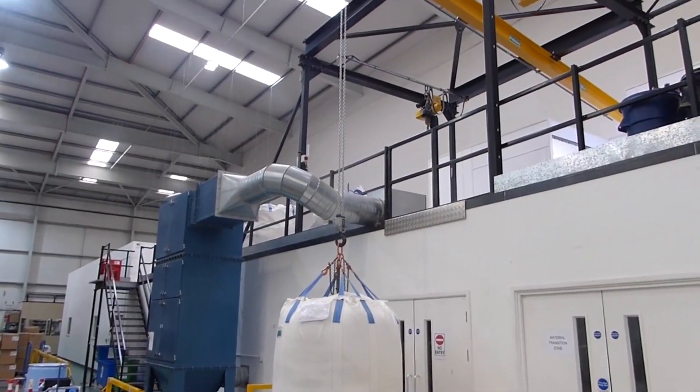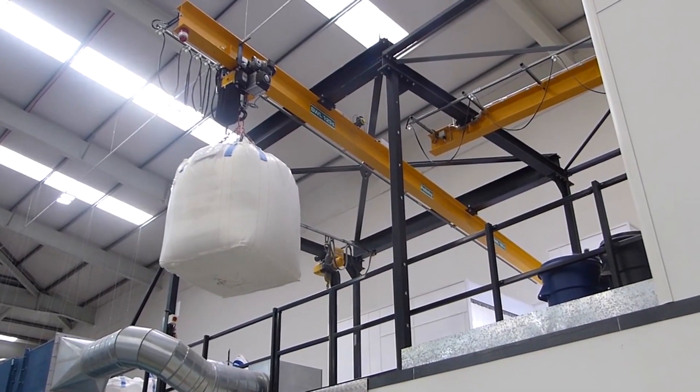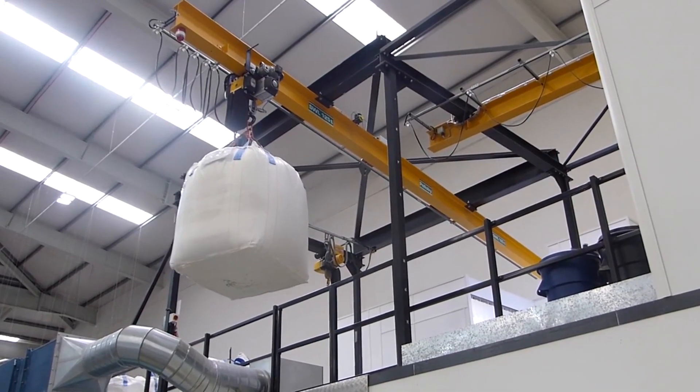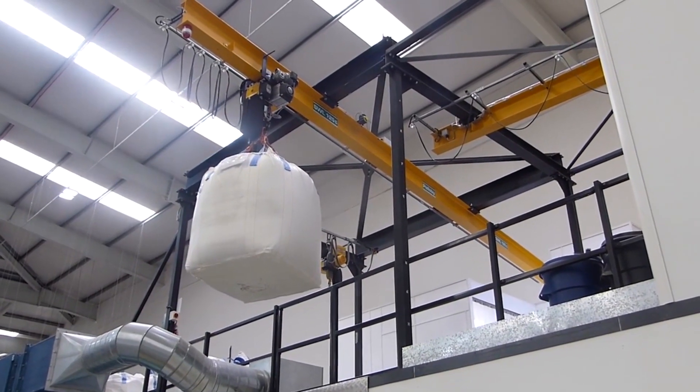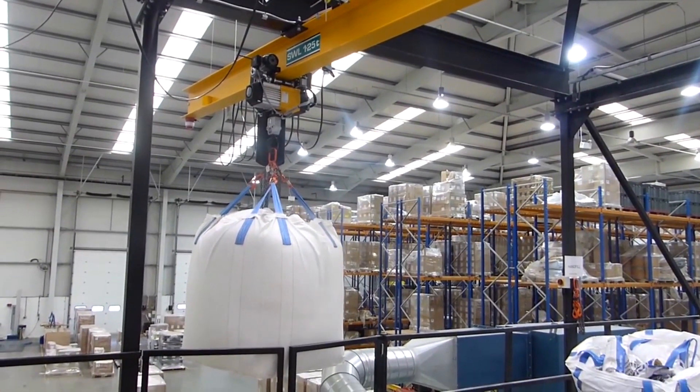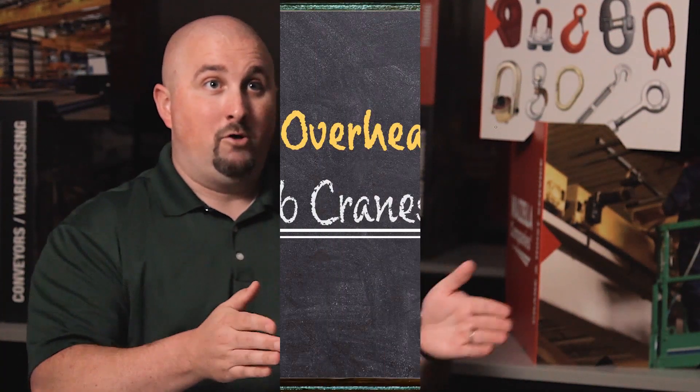Monorails are used in lighter applications as well. What you sacrifice by using a monorail is the Y-axis. Cranes are used for X, Y, and Z axes — lift, side-to-side travel across the bay, and runway travel. A monorail only gives you the lift and runway travel; it's a single line with no side-to-side movement. They're used for moving materials from a drop zone into a machine where side-to-side movement isn't needed at all.